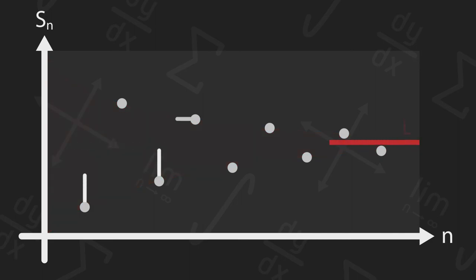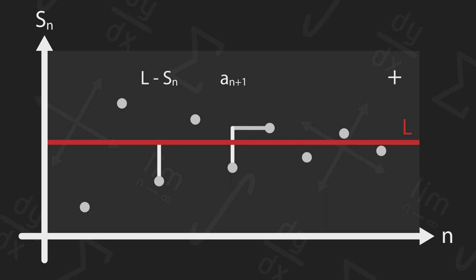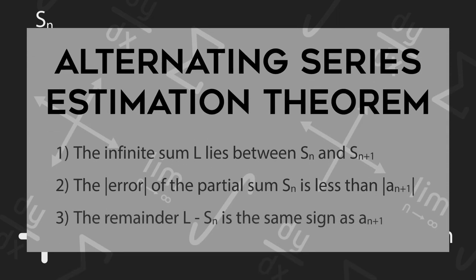It then follows that subtracting S sub n from L will yield a value of the same sign as the term that comes after it. This finding becomes the final part of our theorem.